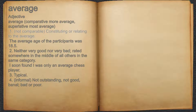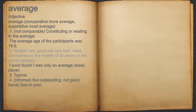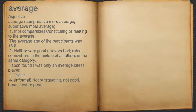Average. Adjective. One: not comparable — constituting or relating to the average; for example, the average age of the participants was eighteen point five. Two: neither very good nor very bad; rated somewhere in the middle of all others in the same category; for example, I soon found I was only an average chess player. Three: typical. Four: informal — not outstanding, not good, banal, bad, or poor.